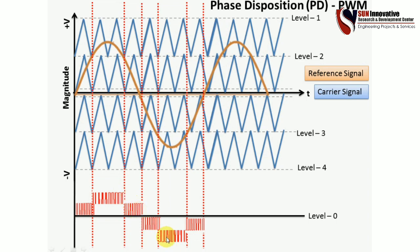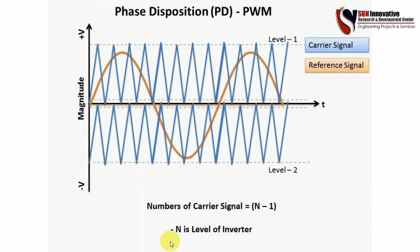This is how you generate PWM pulses using the phase disposition (PD) technique. The equation and the process are summarized here, covering all aspects of phase disposition PWM.